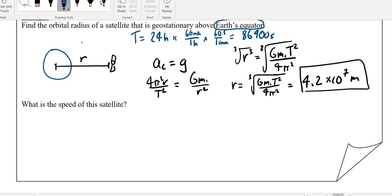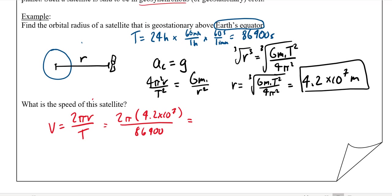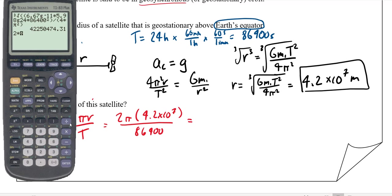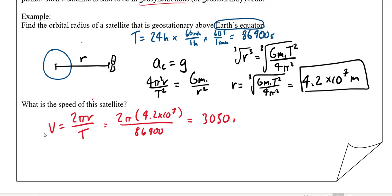To find the speed of the satellite: anything moving in a circle at constant speed has speed 2πr over T. So speed equals 2π times 4.2×10⁷ divided by 86,400, which gives right around just over 3 kilometers per second — let's call it 3,050 meters per second. And that would be the orbital speed.